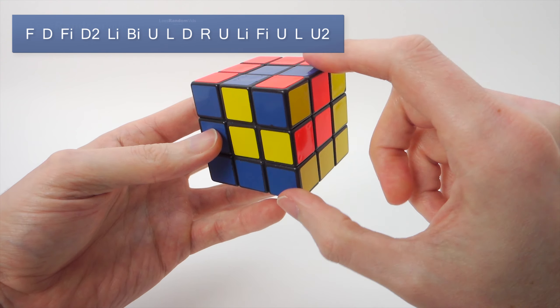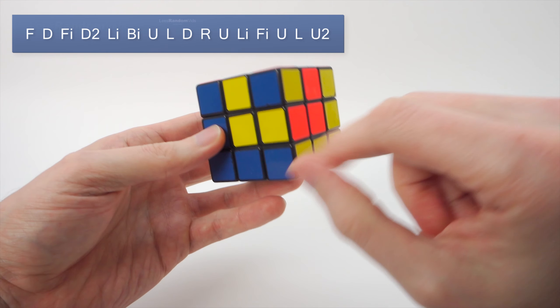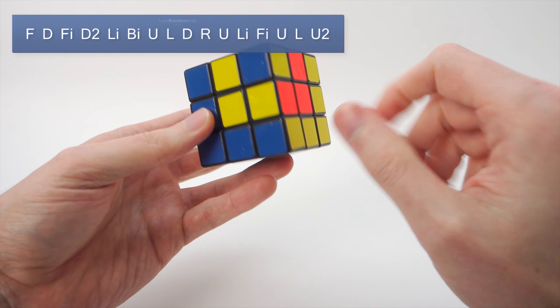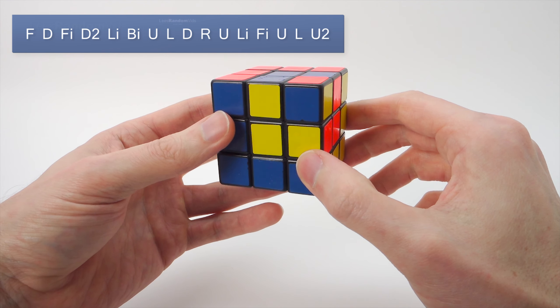And we're still with this ring pattern but the colors have rotated once. And if we do it one more time, we'll be back to a completed Rubik's Cube.